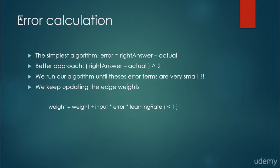We keep updating the edge weights according to this equation: the new weight equals the old weight plus the input times the error times the learning rate. The learning rate is usually smaller than 1.